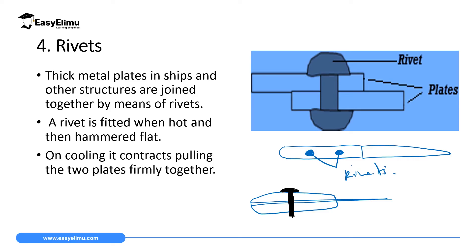When you fix the hot rivet, it has already expanded. You then hammer the lower part very tightly until it holds the two metal plates closely. When the temperature lowers, the rivet contracts and pulls the two plates strongly together. In this case, you have done what we call riveting — holding the two plates very strongly.